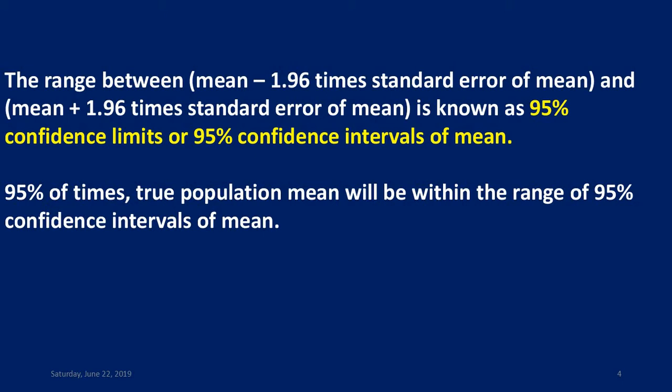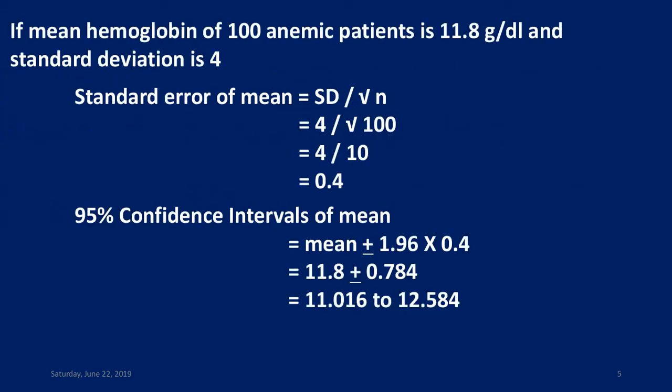95% of the time, the true population mean will be within the range of the 95% confidence interval of mean. Now we can see one example.